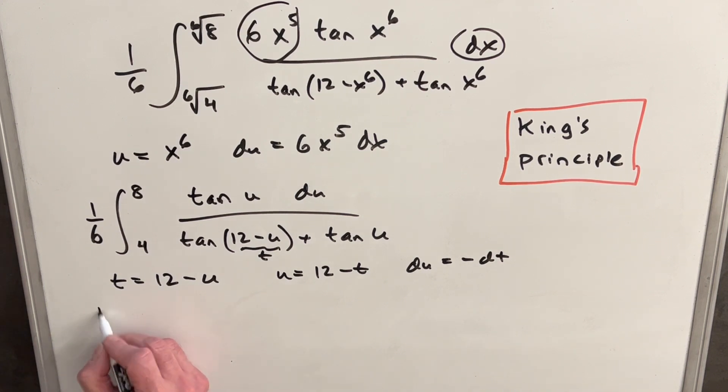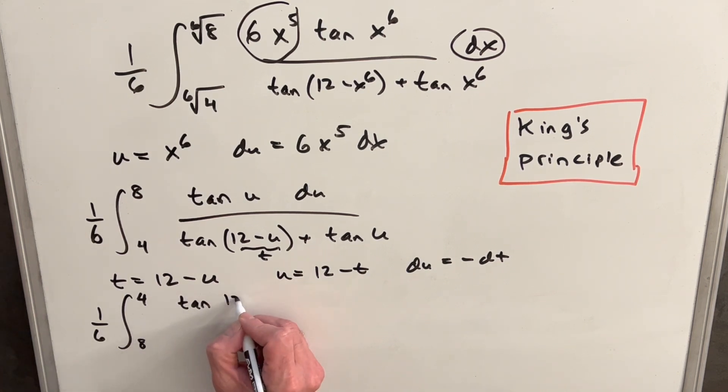Okay, so then we'll make this substitution. We're going to have 1 over 6. We'll plug in our 8 and we get a 4. And we plug in a 4 and we get our 8. These problems always flip the bounds that way. Then in the numerator, we're going to have tan 12 minus t. And then we're going to have in the denominator tan, our 12u is actually t. So we're going to have tan t here plus tan 12 minus t.